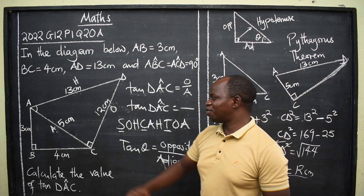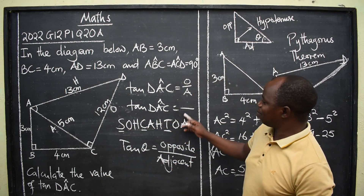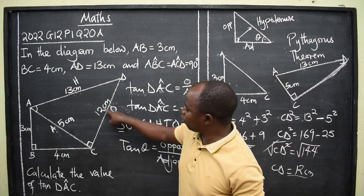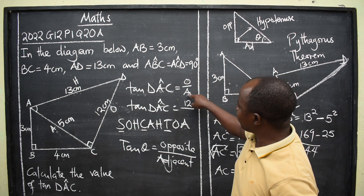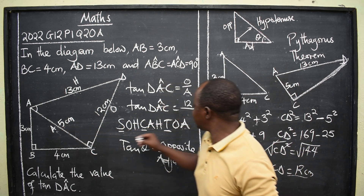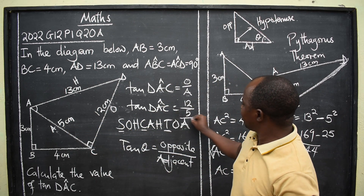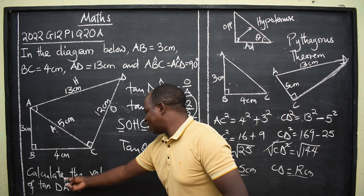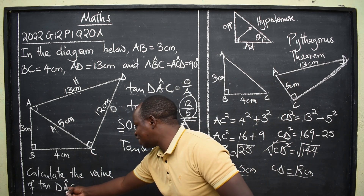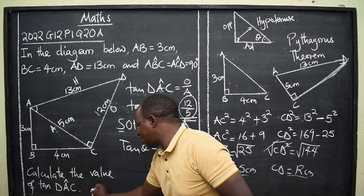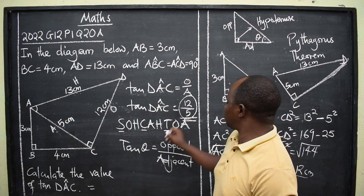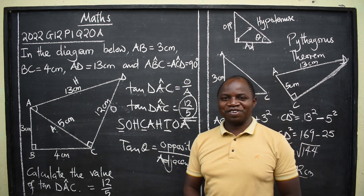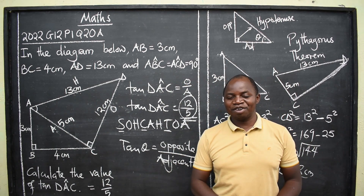Now that we have the sides, we substitute. The opposite is CD = 12 and the adjacent is AC = 5. Therefore, tan DAC = 12/5. Thank you very much for watching.